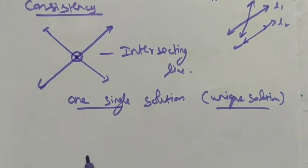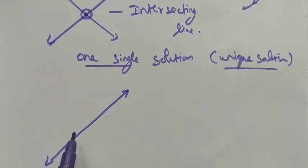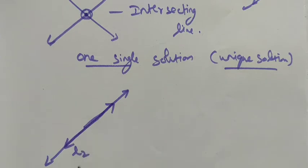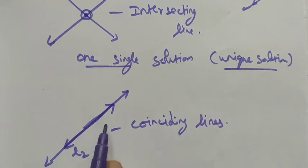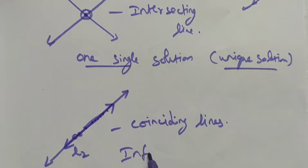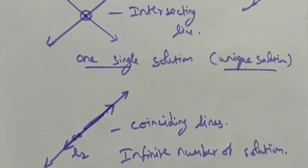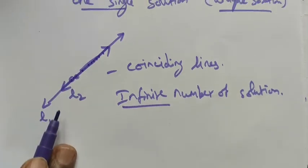Another example of consistency is when two lines coincide. If L is a line and L2 is in the same position, they are coincident — mingled together. For coinciding lines, we can find infinitely many solutions — an infinite number of solutions.